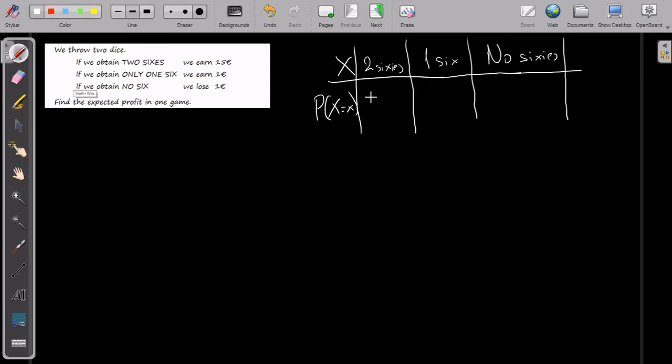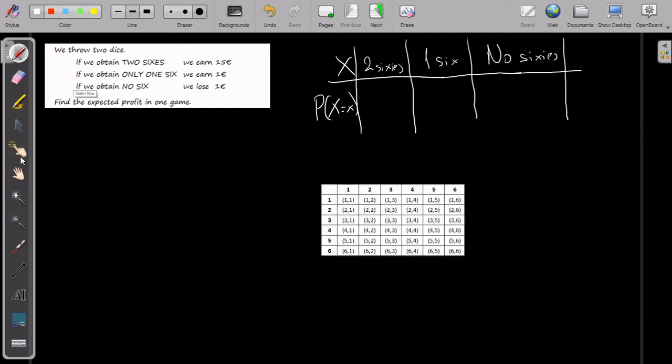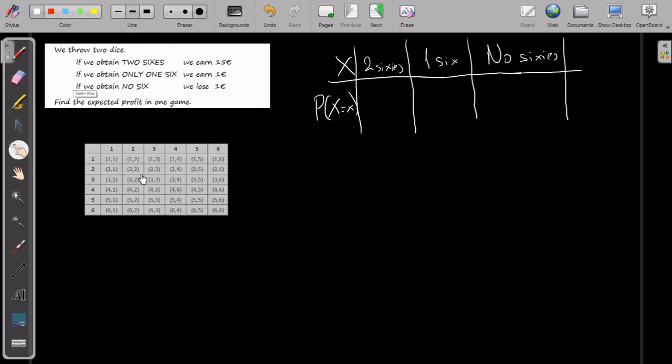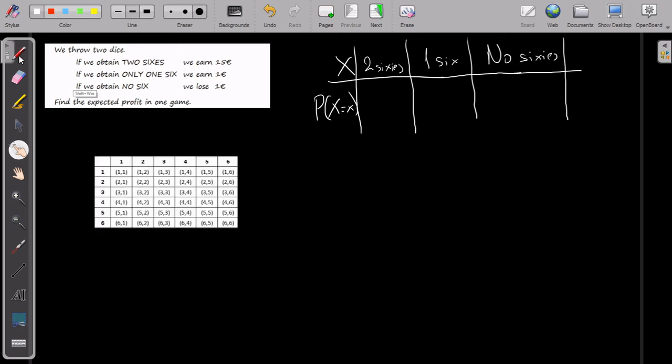Now, to find, if I throw two dice, what's the probability of bringing two sixes, I just need a table like this one here, where it has all my probabilities when I throw two dice.